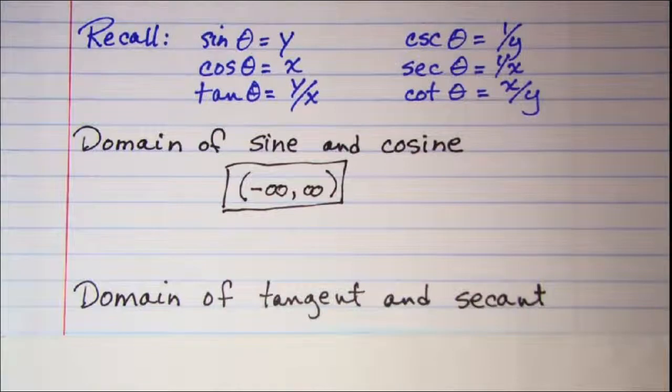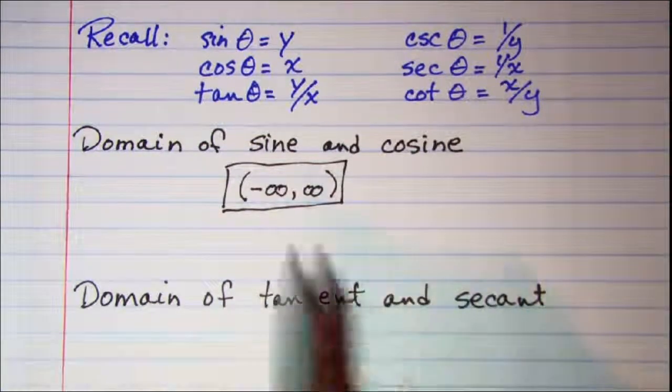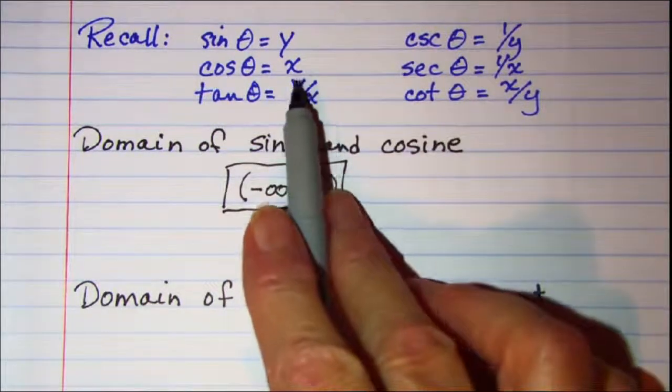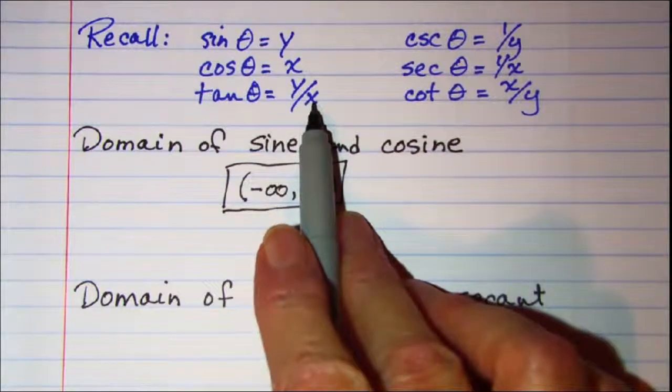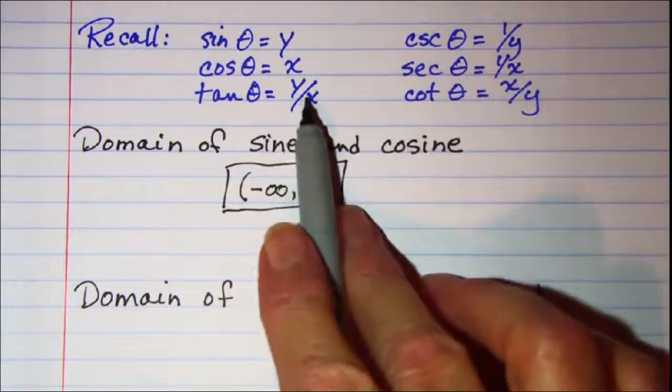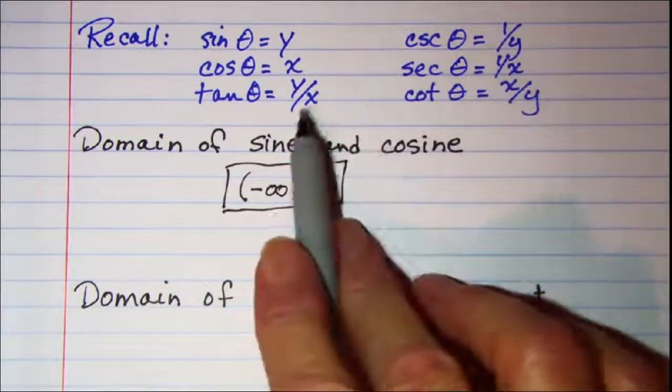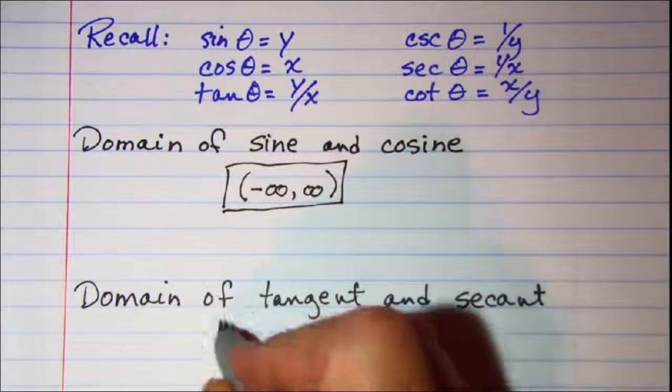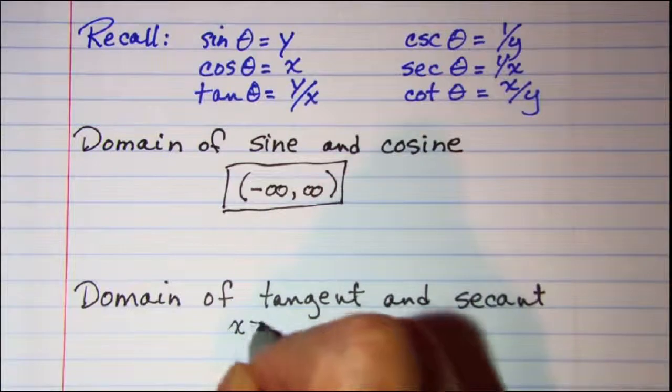For the domain of tangent and secant: tangent is y over x and secant is 1 over x. I picked those two because they have a denominator of x, and we know that x cannot equal 0.